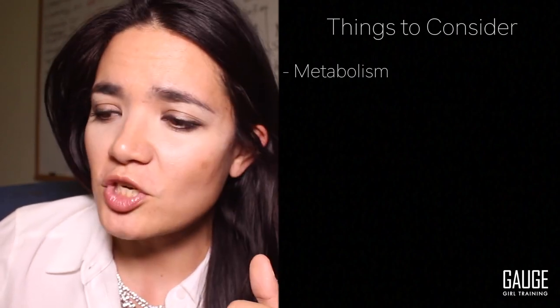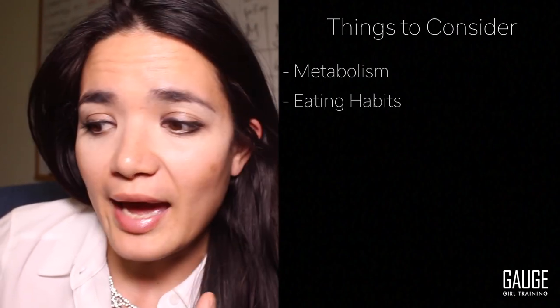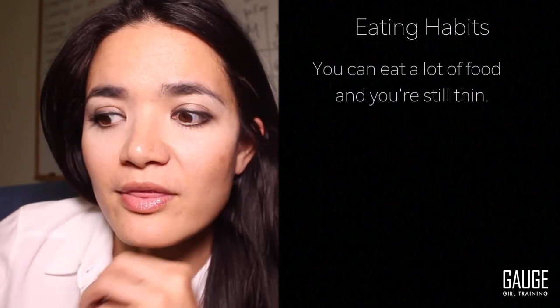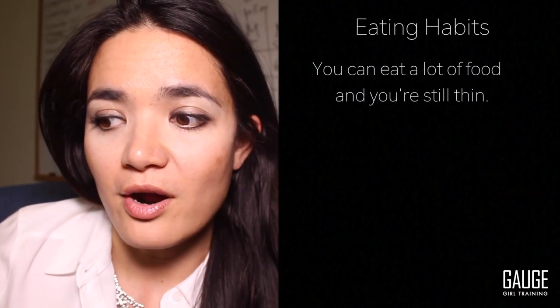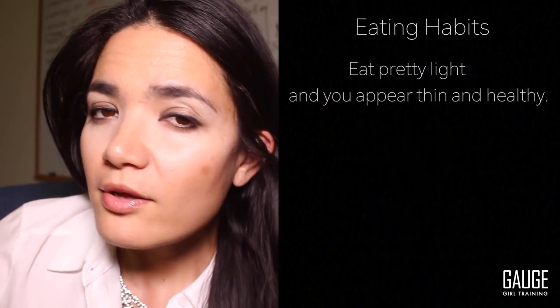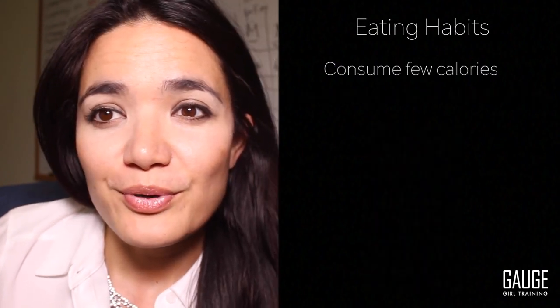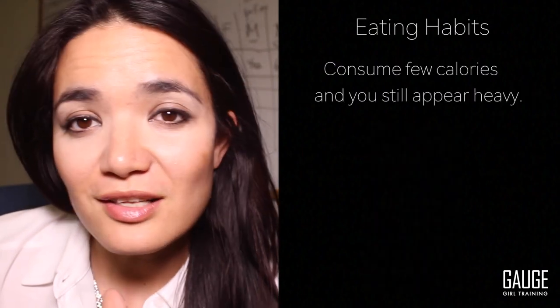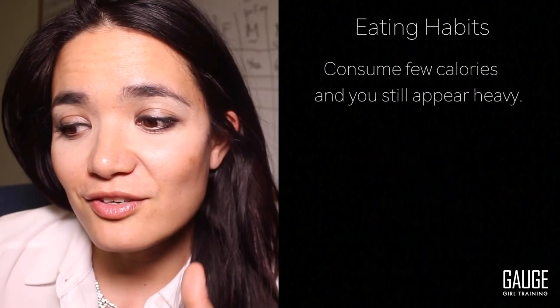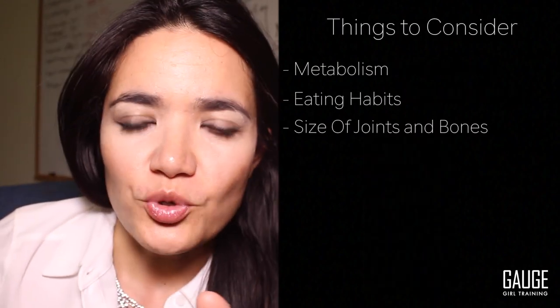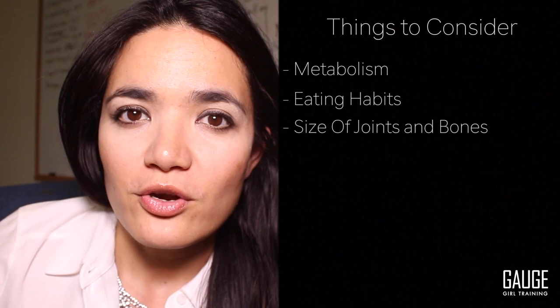The other thing to look at to help determine your body type is your eating habits. If you could eat a lot of food and you are still thin, you are an ectomorph. If you eat pretty light and you appear thin and healthy, you're most likely a mesomorph. And if you consume pretty few calories and you're still appearing heavy, you are most likely an endomorph.